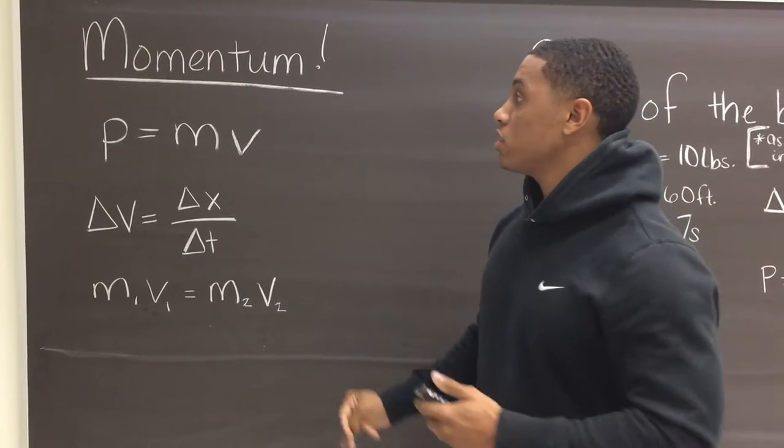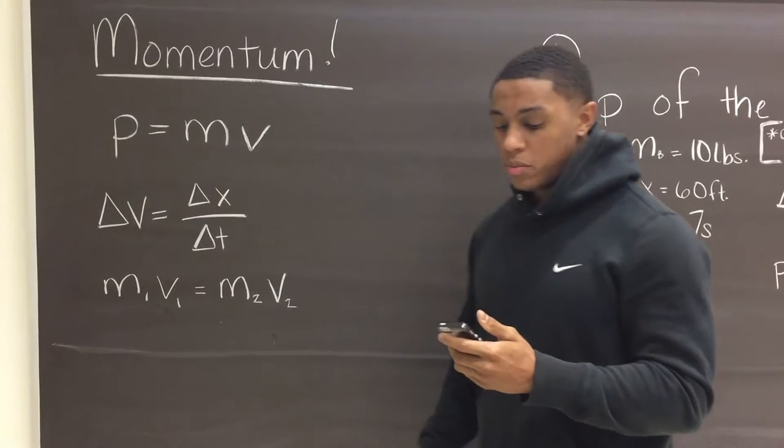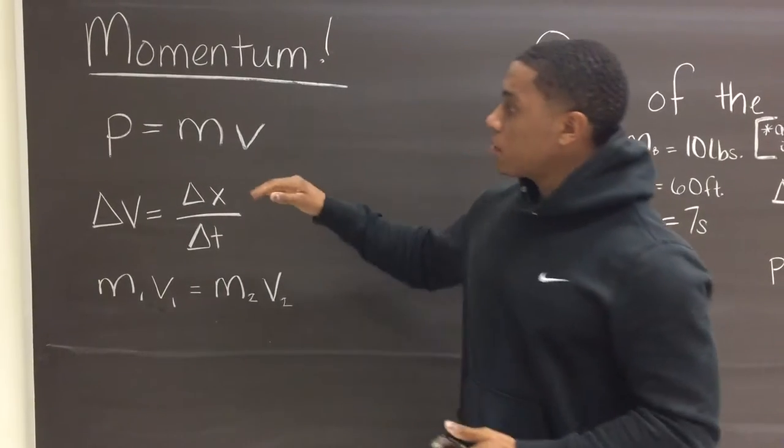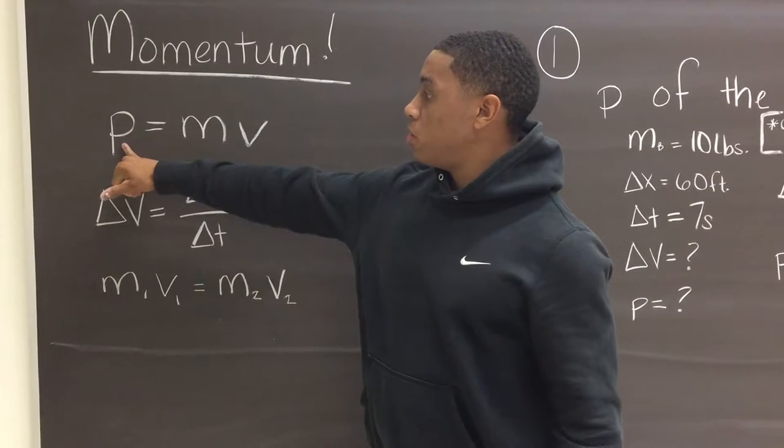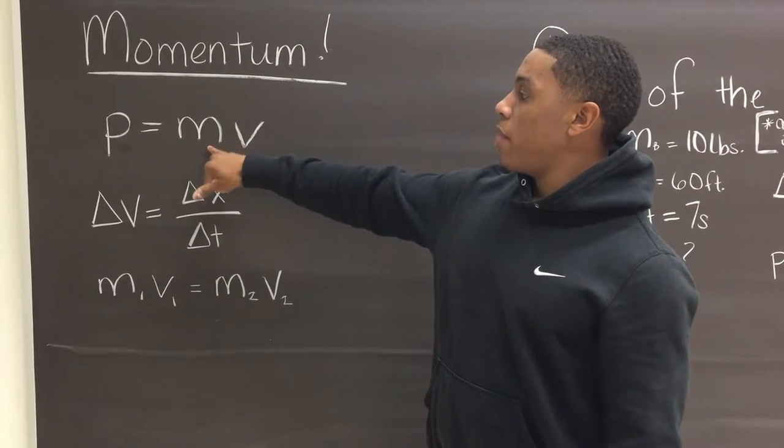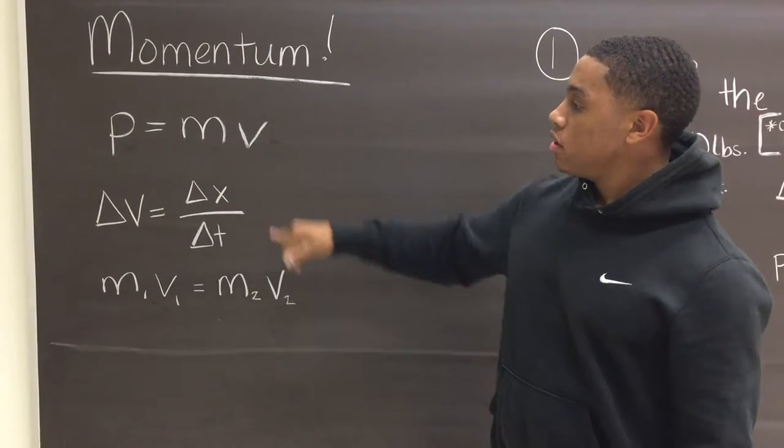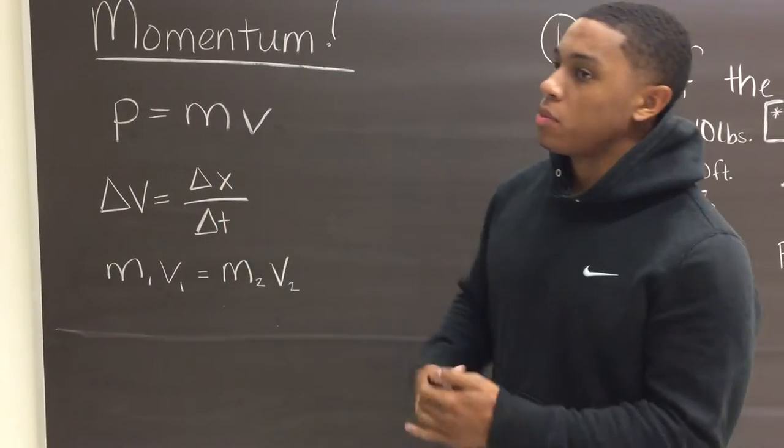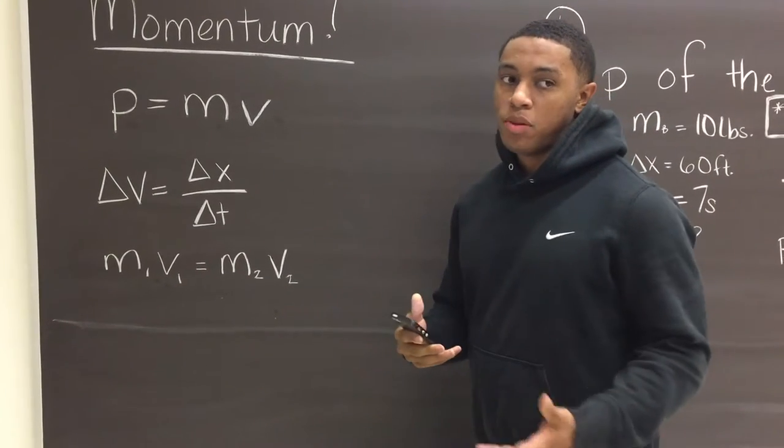My name is Christian White. I'm going to be talking about momentum. Momentum is a quantity formed by the mass of an object and its velocity. It can be described as P, which is the momentum, equals the mass times velocity. In terms of momentum,